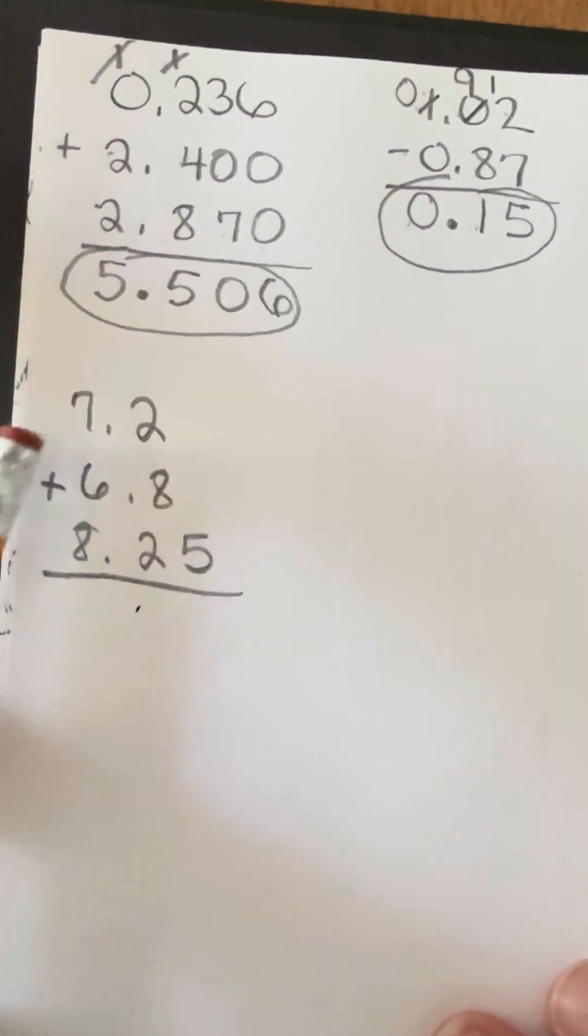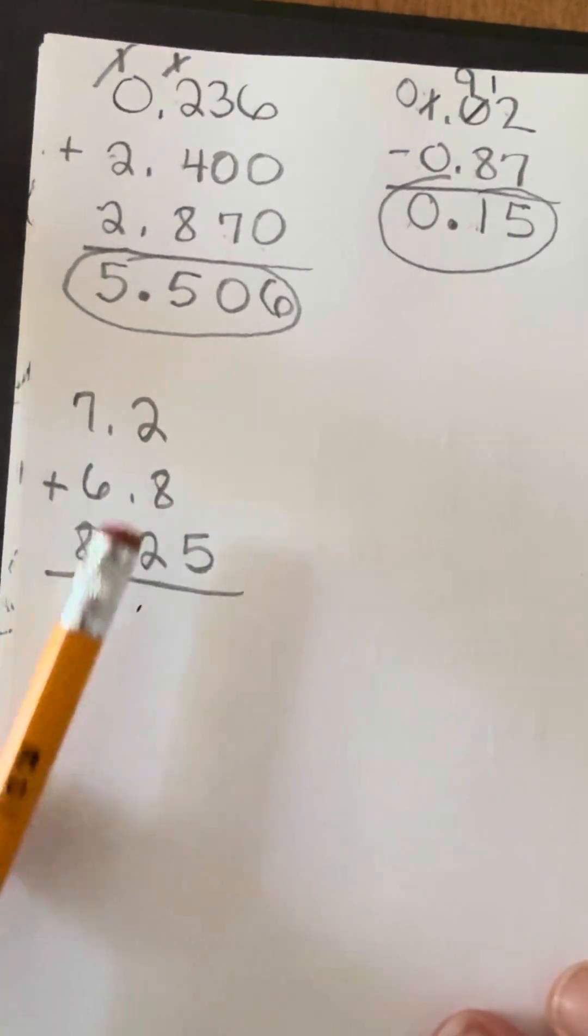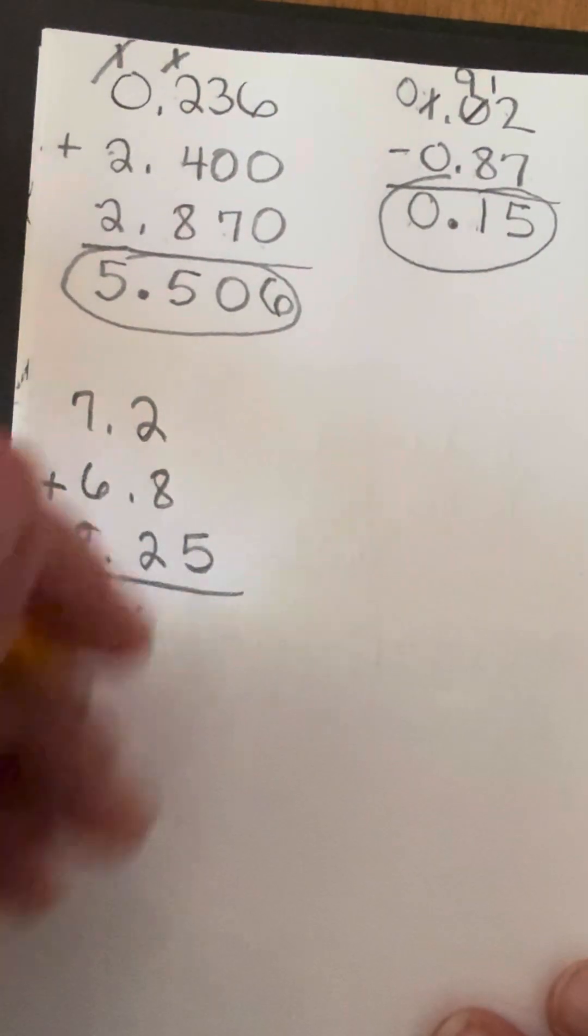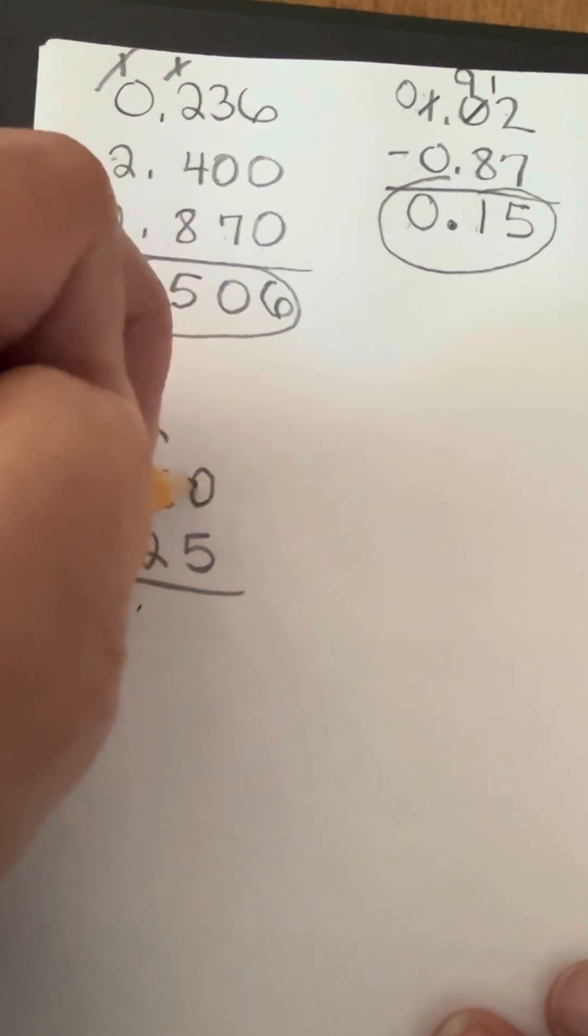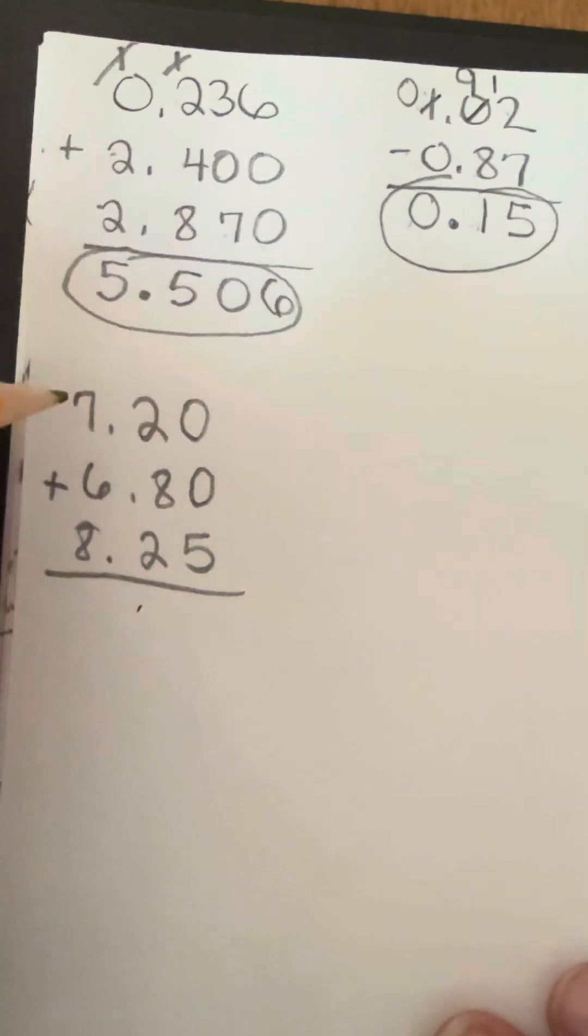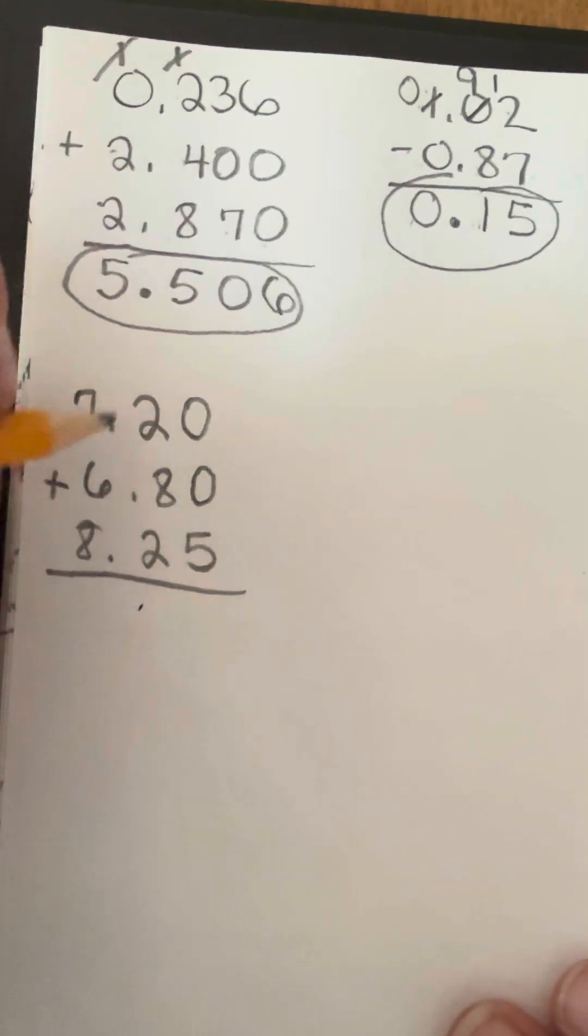Now, notice that I lined everything up with the ones position, the decimals, and then the tenths positions. There is a hundredth position right here. So I'm going to throw in some zeros as placeholders for these problems. And now I'm going to solve.